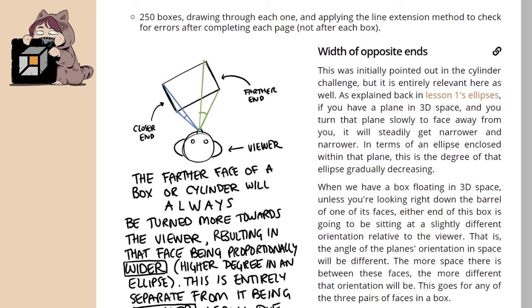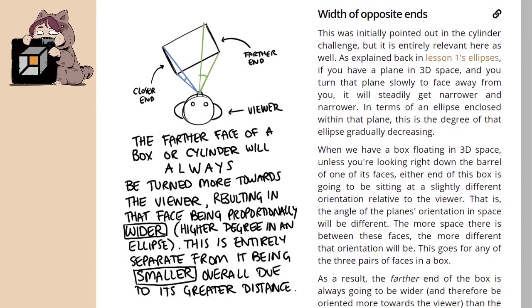Width of opposite ends. This was initially pointed out in the cylinder challenge but is entirely relevant here as well. As explained back in Lesson 1's ellipses, if you have a plane in 3D space and you turn that plane slowly to face away from you, it will steadily get narrower and narrower. In terms of an ellipse enclosed within that plane, this is the degree of that ellipse gradually decreasing. When we have a box floating in 3D space, unless you're looking right down the barrel of one of its faces, either end of the box is going to be sitting at a slightly different orientation relative to the viewer. That is, the angle of the plane's orientation in space will be different. The more space there is between these faces, the more different that orientation will be. This goes for any of the three pairs of faces in a box.